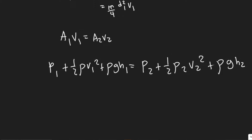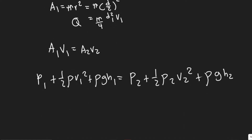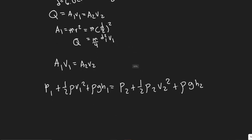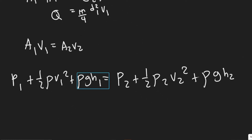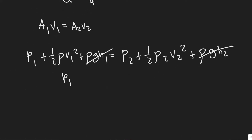We need to solve for V1 first, then plug it into the flow rate formula. Since the pipe is horizontal, the height is constant, so H1 and H2 are equal and cancel out. Bernoulli's equation simplifies to: P1 plus one-half rho V1 squared equals P2 plus one-half rho V2 squared.